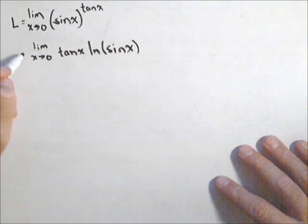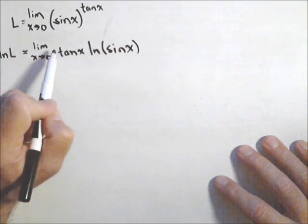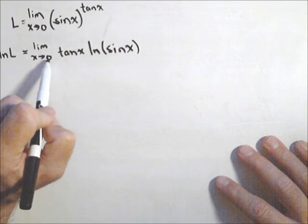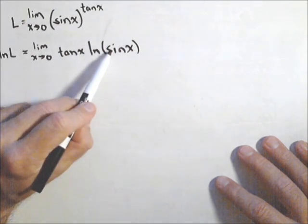So I'm no longer solving for L. I'm actually gonna solve for the ln of L. We're gonna take the limit of this guy, because notice what happens now. I have a zero times infinity case.